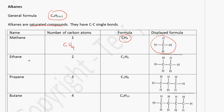The next member is ethane. Ethane has 2 carbon atoms, so the formula will be C2H. If we use the formula, it'll be 2 times 2, which is 4, plus 2, which is 6. So that is how we got C2H6 — we have 2 carbon atoms and 6 hydrogen atoms.